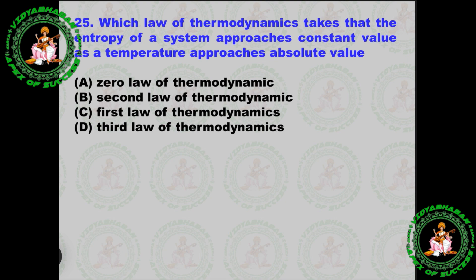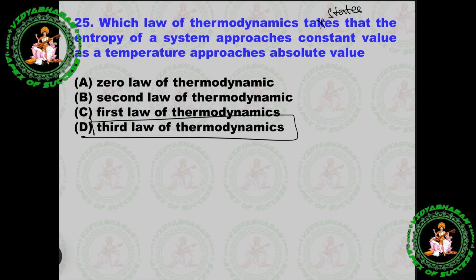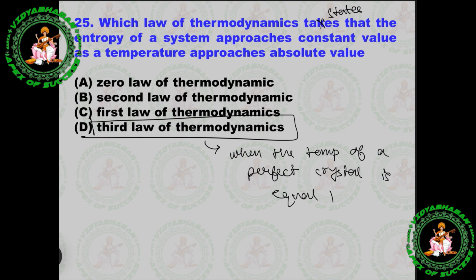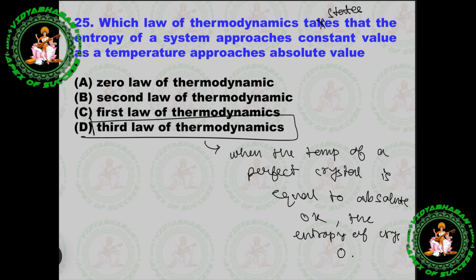Next question: Which law of thermodynamics states that the entropy of a system approaches a constant value as the temperature approaches absolute zero? The answer is the 3rd law of thermodynamics. It states that when the temperature of a perfect crystal equals absolute zero Kelvin, the entropy of the crystal is zero.